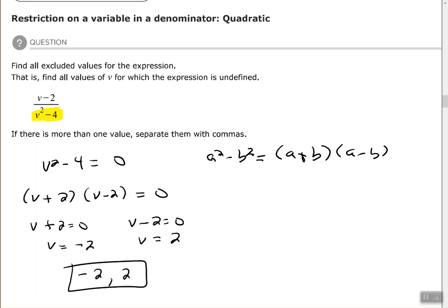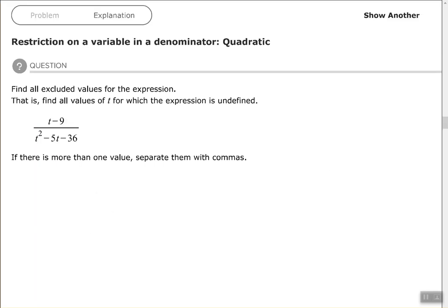Okay, let's look at another one. So here we have t minus 9 over t squared minus 5t minus 36. Again, since we're only asked to find the excluded values, we only need to look at our denominator and find out what makes our denominator equal to zero, because remember anything divided by zero is undefined, so those will be excluded values.